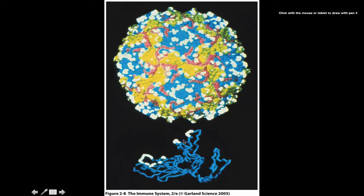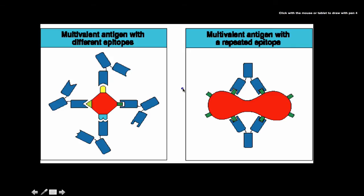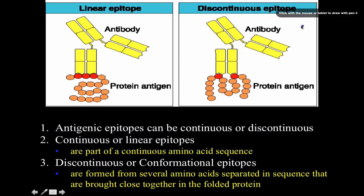There are two types of epitopes or antigen determinants. These can be multivalent antigens with multiple different epitopes, so we have different parts that we can bind to, or we can have multivalent antigens with repeated epitopes where all the epitopes are the same.